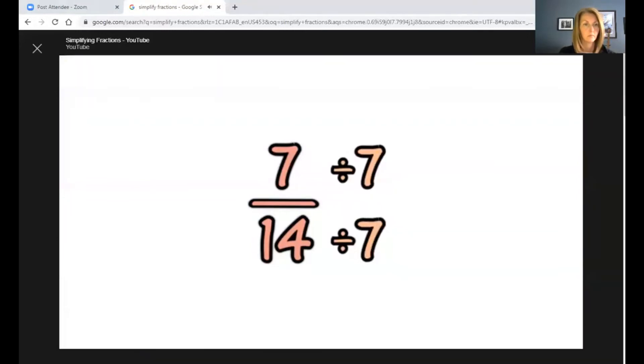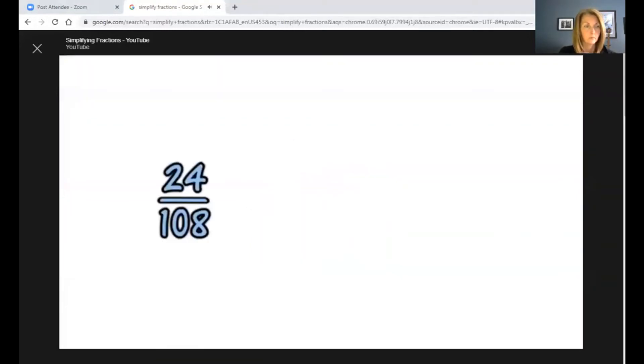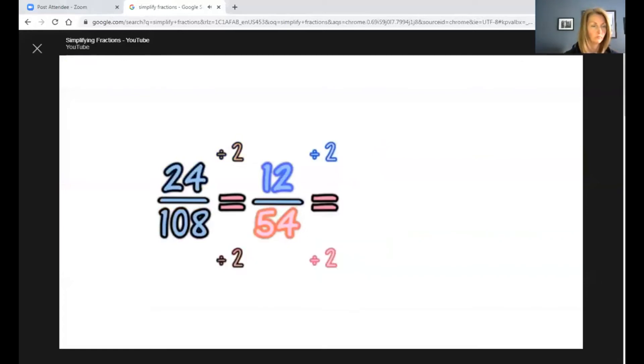Example: Simplify the fraction 24 over 108. First, divide it by 2. 24 divided by 2 is 12, and 108 divided by 2 is 54. Divide the 12 and the 54 again by 2. You get 6 over 27. Now divide by 3 and you get 2 ninths.